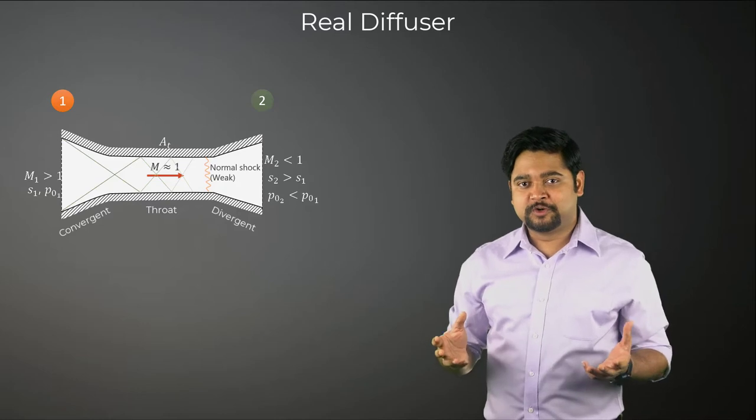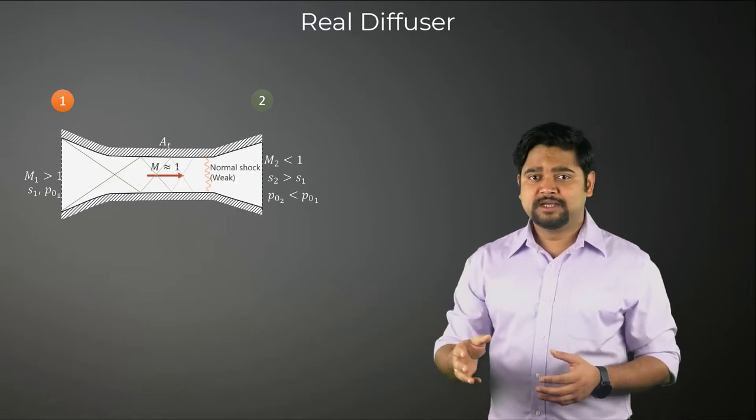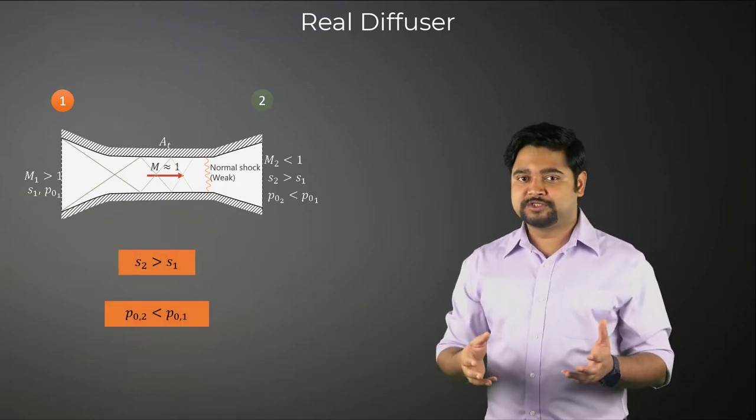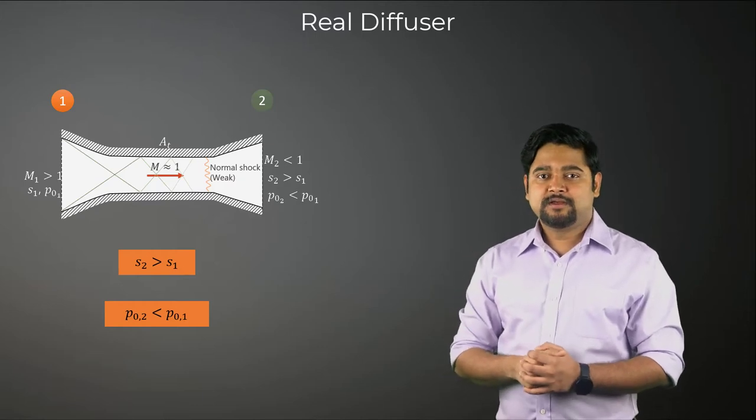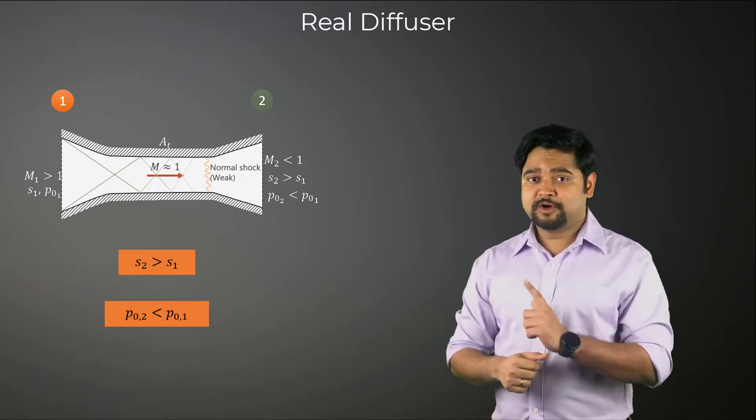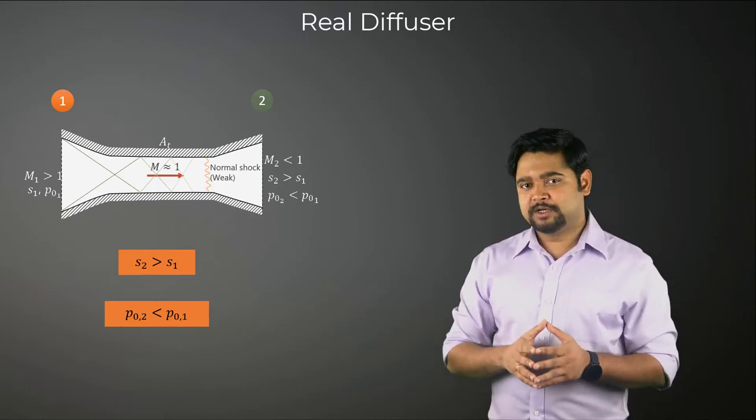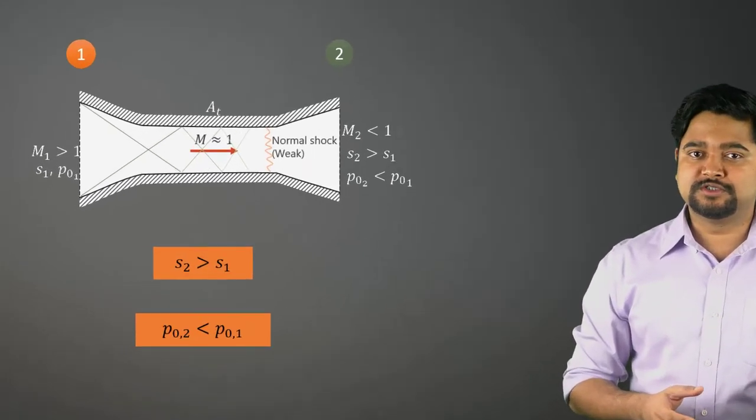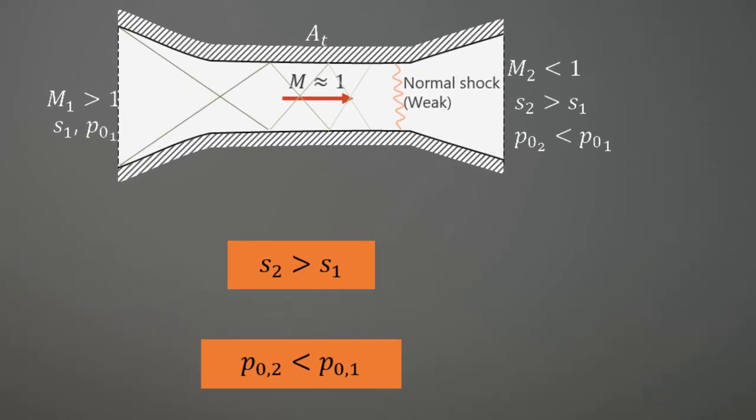As the flow is no longer isentropic, the entropy at the exit is higher and the total pressure is lower. Therefore, the design problem of a diffuser can be summed up as the process of designing the converging constant area and the diverging section to obtain the desired exit Mach number with the least possible total pressure loss.